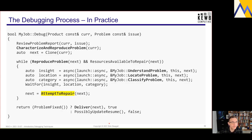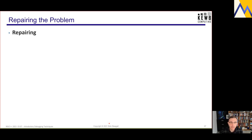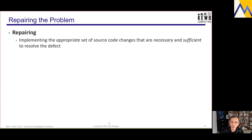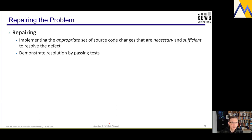The next thing, having gone through all that, is to try to repair the problem — implementing an appropriate set of source code changes that are necessary and sufficient to resolve the problem. In other words, change the minimum set of things to fix the defect. You demonstrate that the product is repaired by passing existing tests with no regressions, and by passing the new tests that you've written that exercise the previously failing behavior.